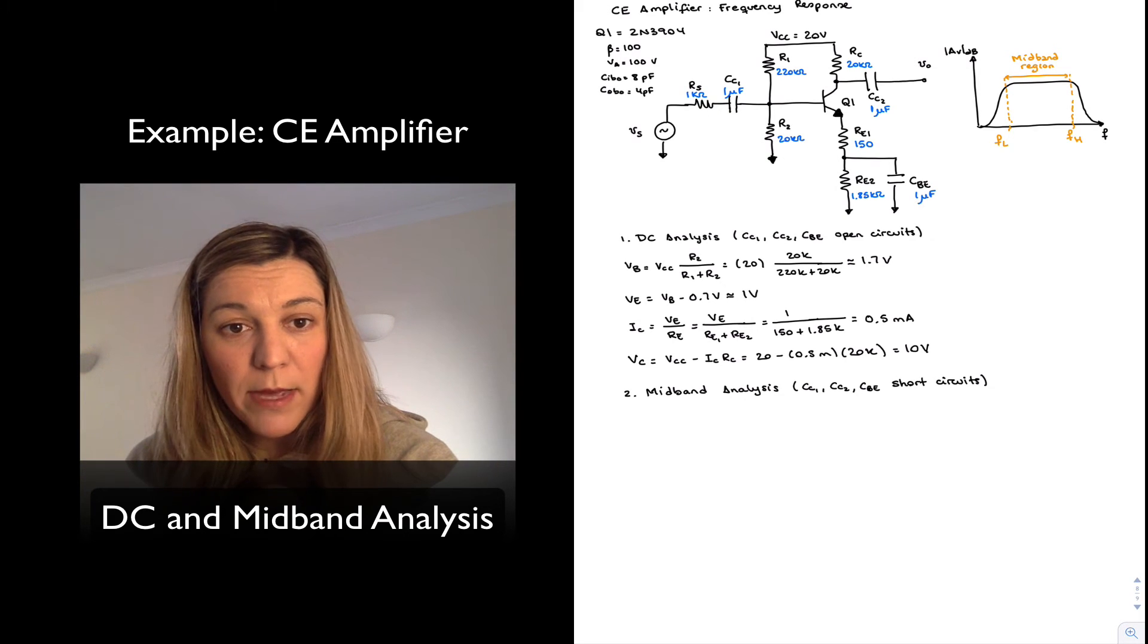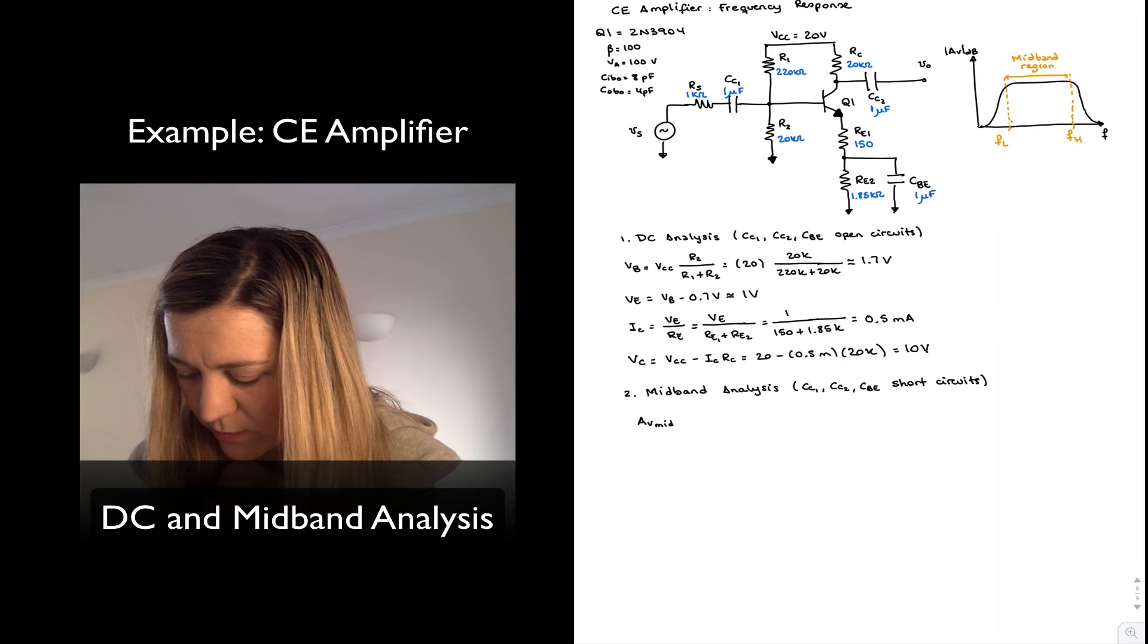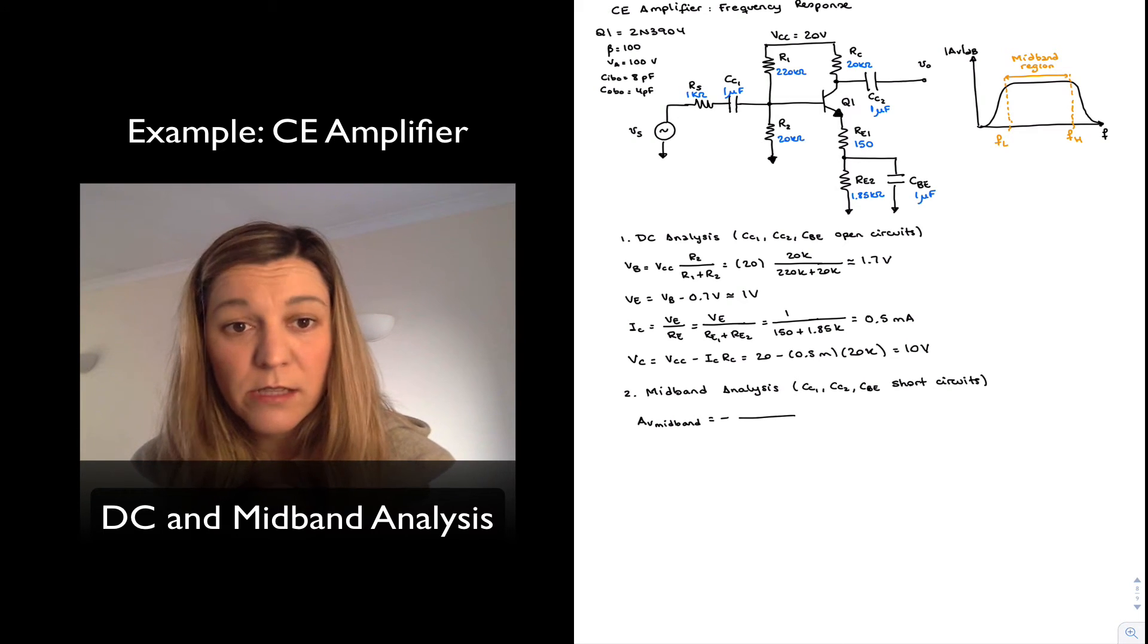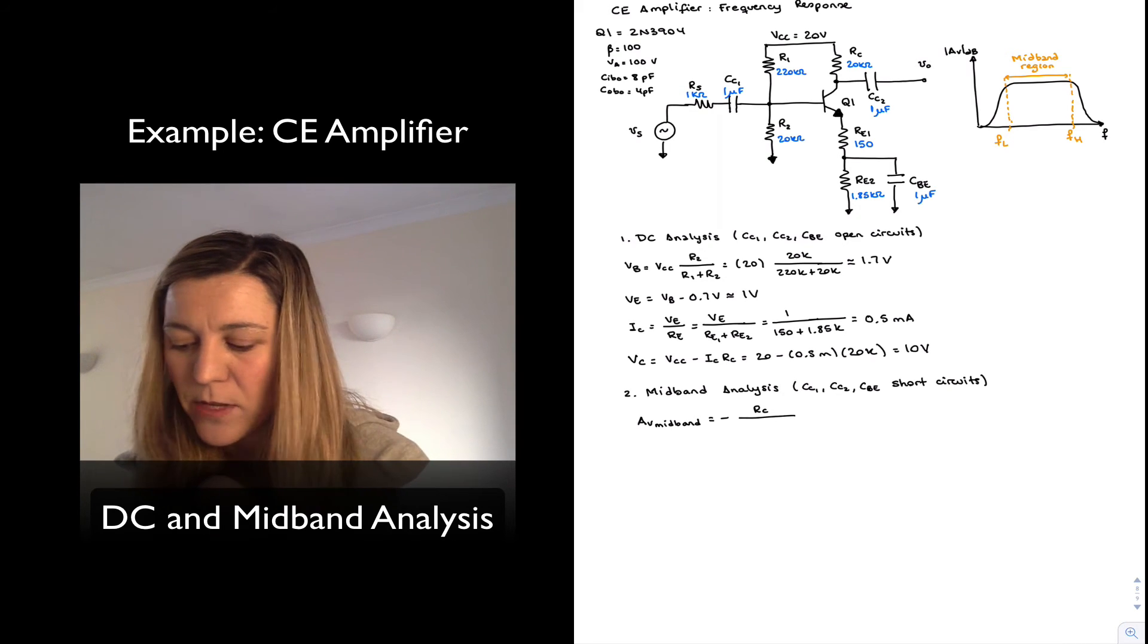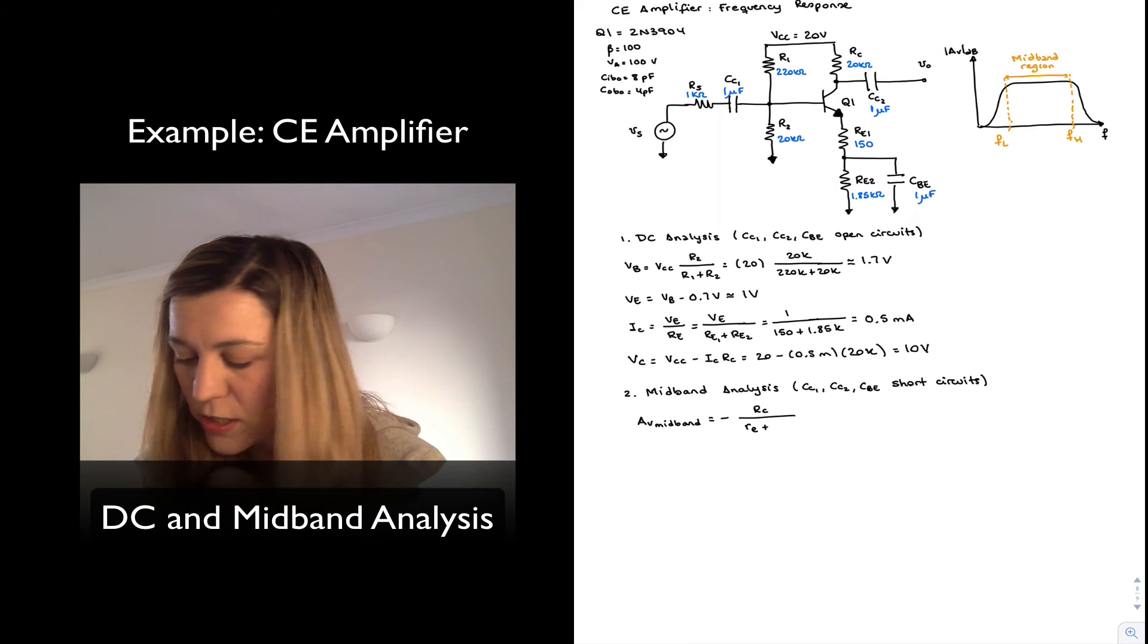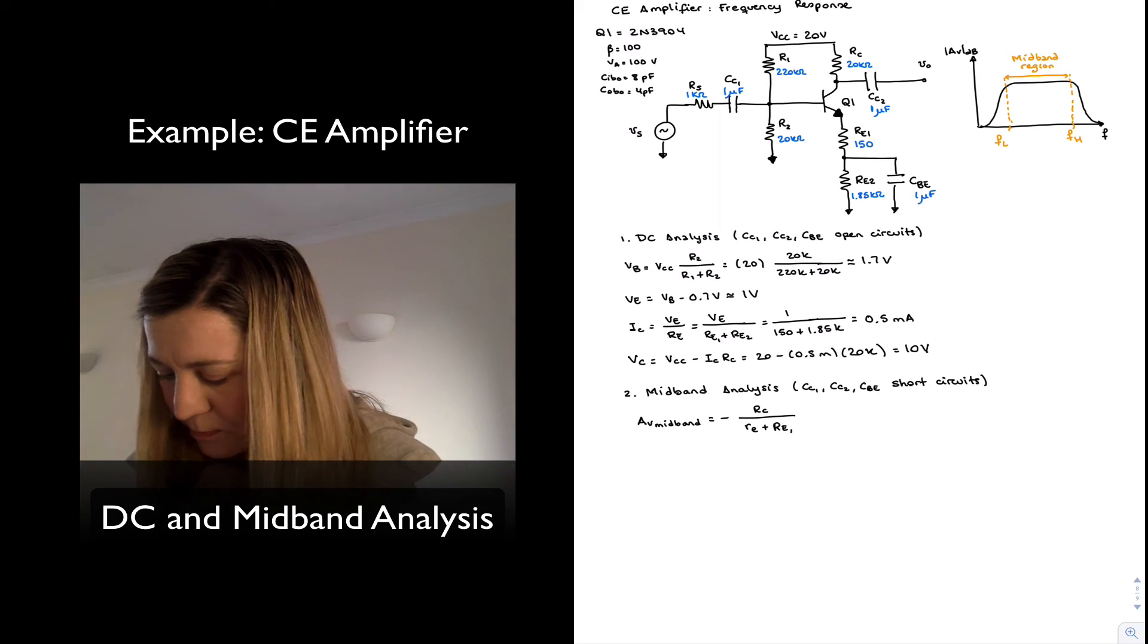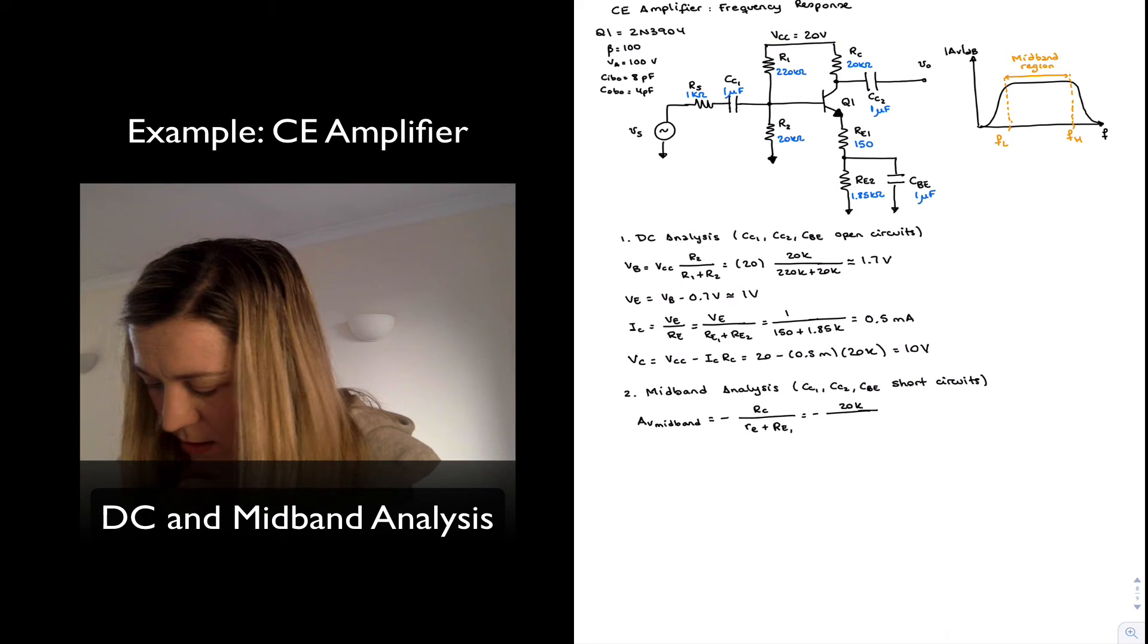And so first, I'm going to calculate my mid-band gain. AV mid-band for a common emitter amplifier is going to be minus the overall collector resistance divided by the overall emitter resistance. So minus RC divided by, and the overall emitter resistance is going to be the dynamic resistance of the base emitter junction, plus emitter resistor RE1, since RE2, in this case, is being bypassed by capacitor CBE.